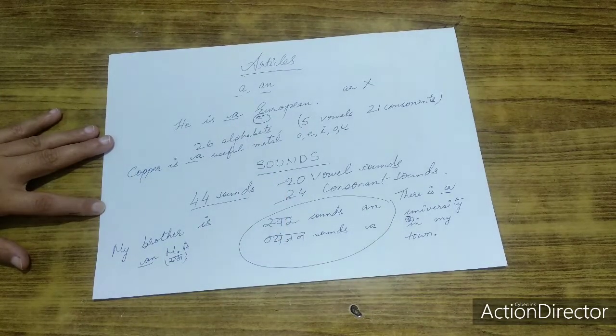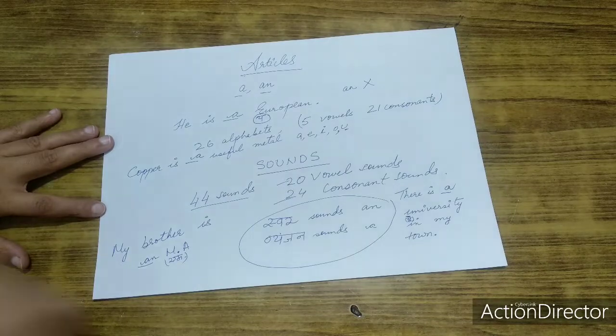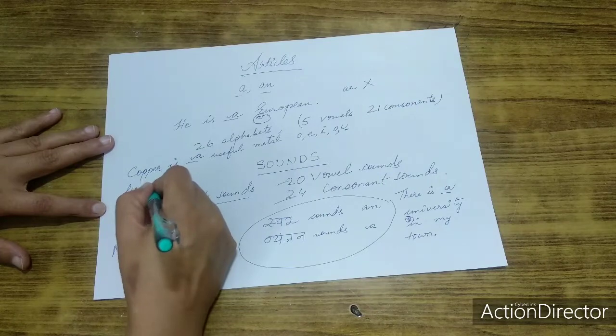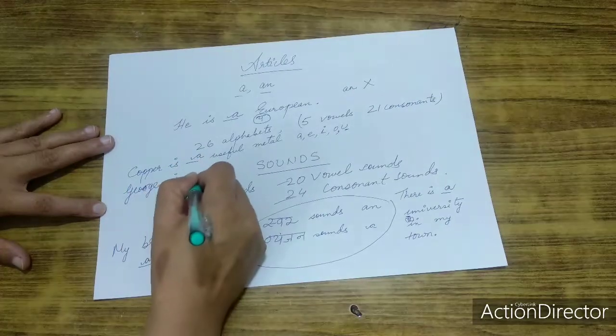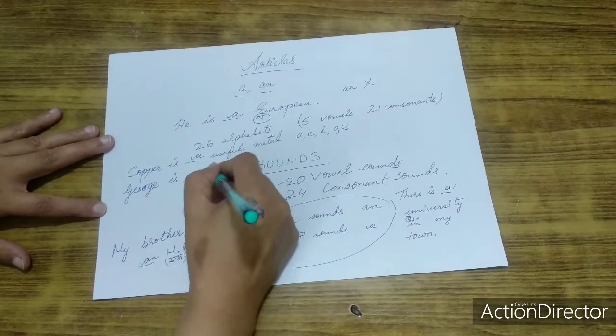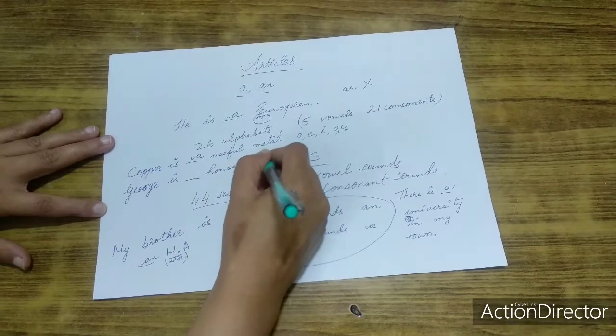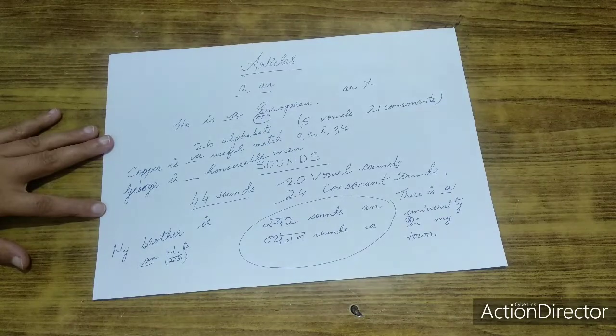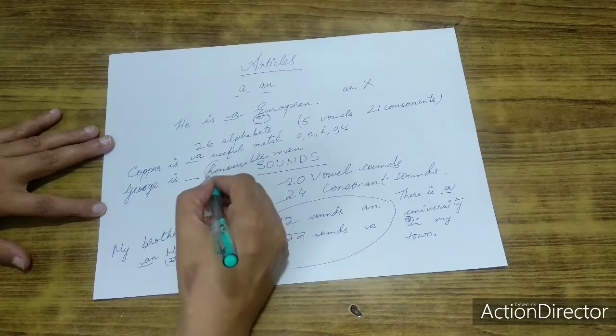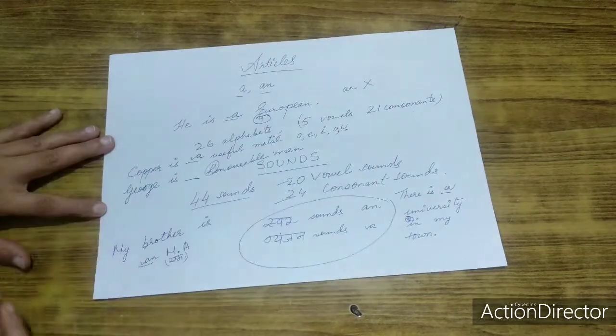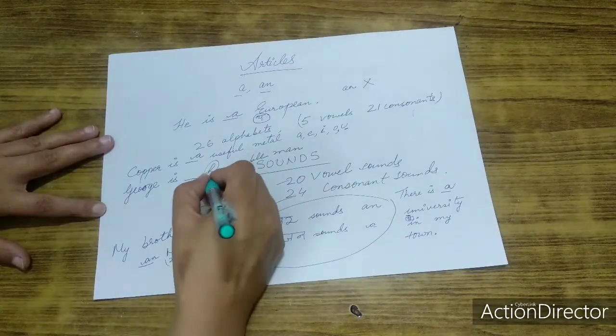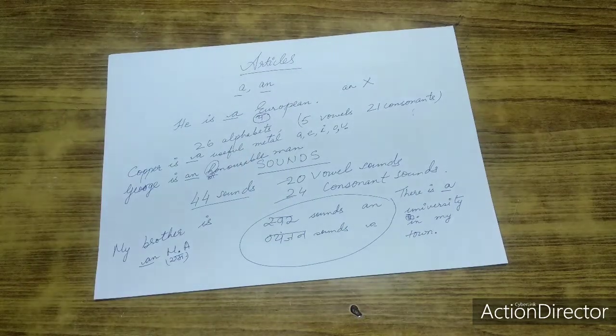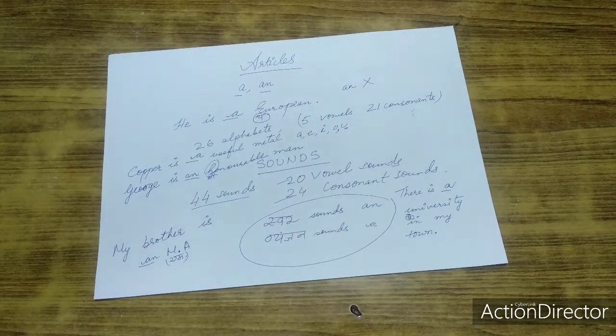Right. Now we say, George is dash honorable man. Sound, the word here is a consonant, but the sound is vowel. That is why George is an honorable man. Okay.